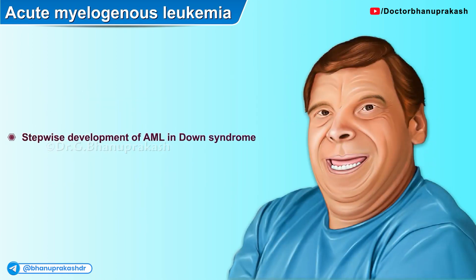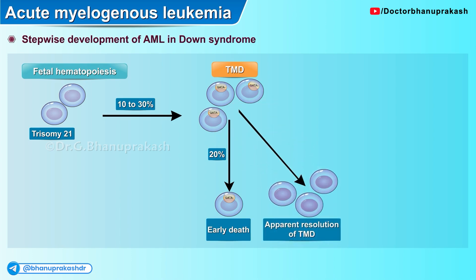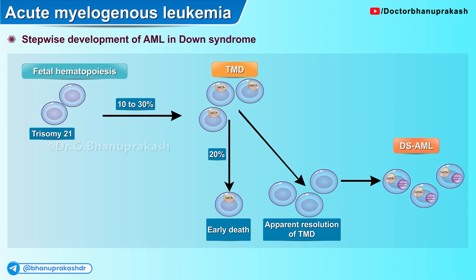Here is a stepwise schematic of the development of acute myeloid leukemia in patients with Down syndrome. During fetal hematopoiesis, about 10 to 30 percent of patients with Down syndrome can develop a transient myeloproliferative disorder, of which about 20 percent can witness death. GATA1 mutations in prenatal hematopoietic stem cells with trisomy 21 result in this transient myeloproliferative disorder. Additional mutations cooperating with mutant GATA1 result in transformation to myelodysplastic syndrome and acute myelogenous leukemia in a subset.